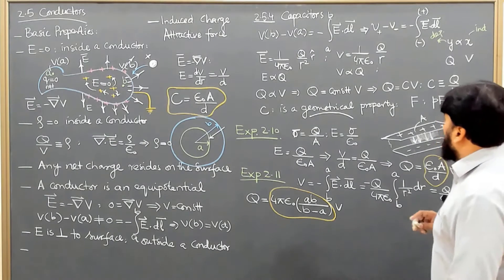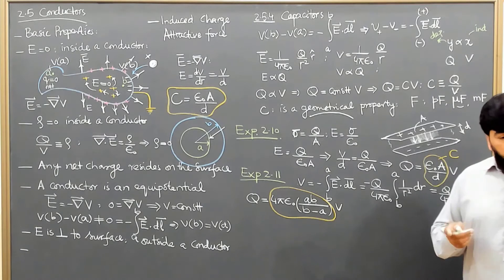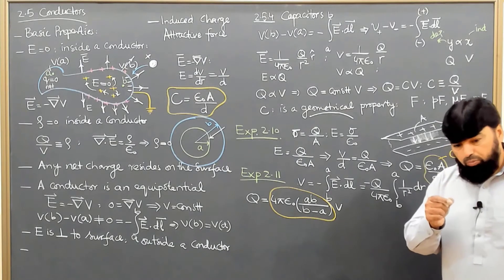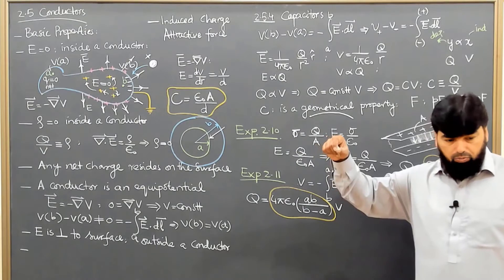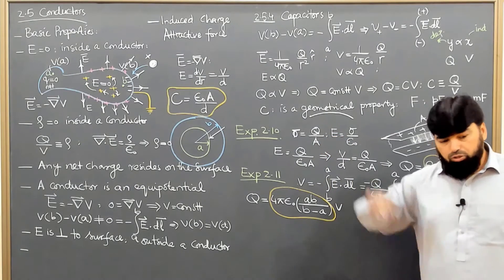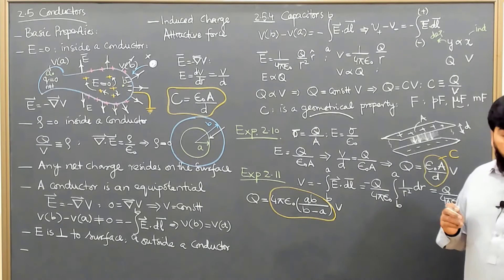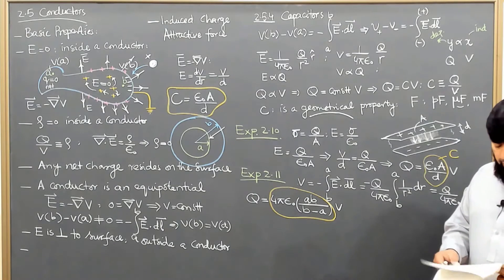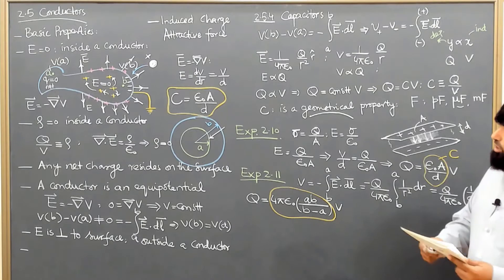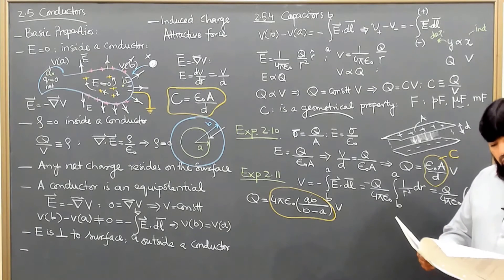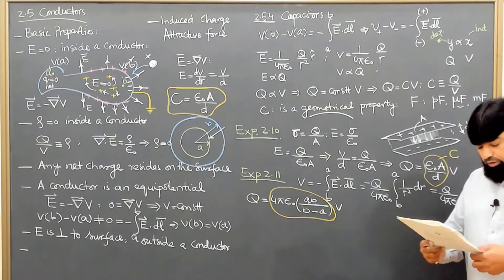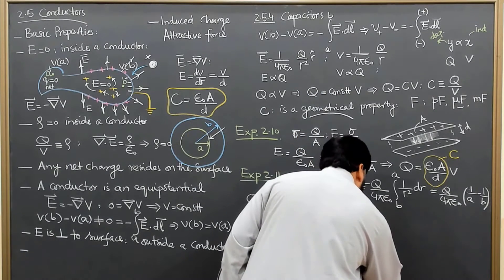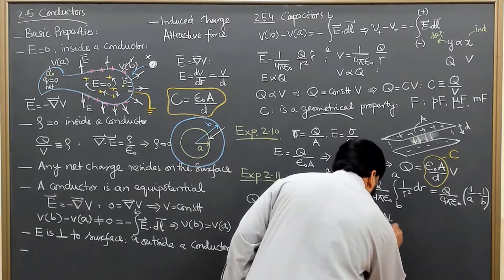Now, as mentioned earlier, when we charge up a capacitor we remove negative charges from the positive plate and move them to the negative plate, doing work in the process. We can calculate how much work is done. The potential is basically the work done per unit charge.